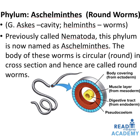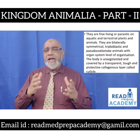Now let us move on to Phylum Aschelminthes, otherwise called the roundworms — a Greek word; 'ascus' means cavity, 'helminth' means worms, previously called Nematoda. The body of these worms is circular and round in cross-section, hence called roundworms. In the image below you can see the roundworm cross-section showing a body covering forming the ectoderm, a muscle layer forming the mesoderm, a digestive tract forming the endoderm, and between the muscle layer and the gastric cavity is the pseudocoelome.